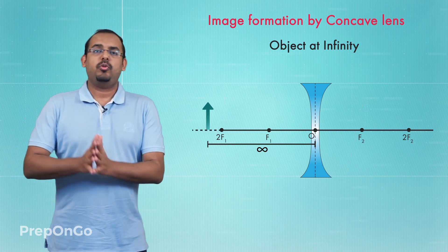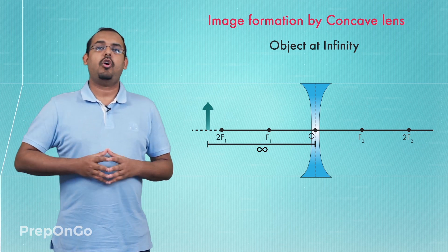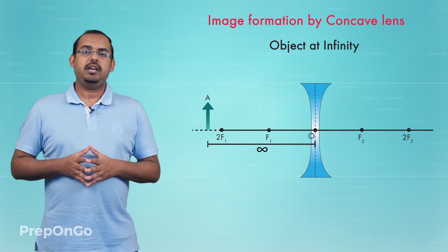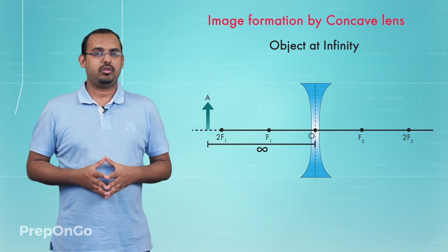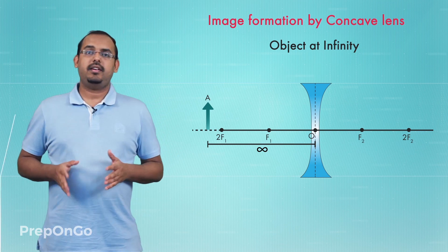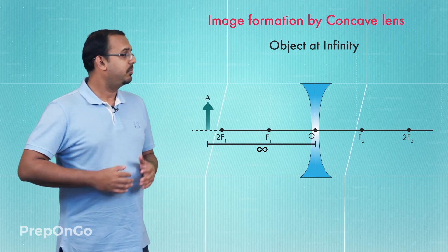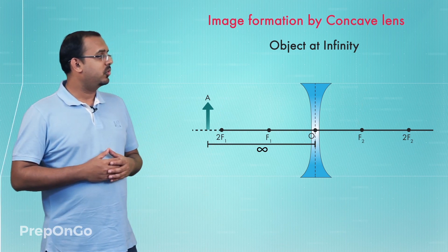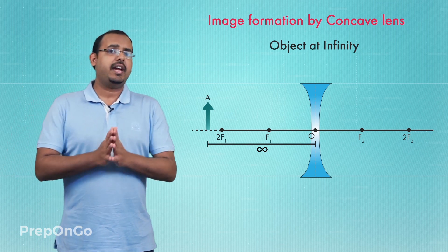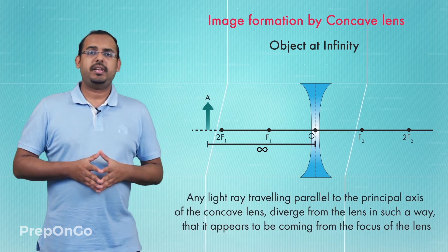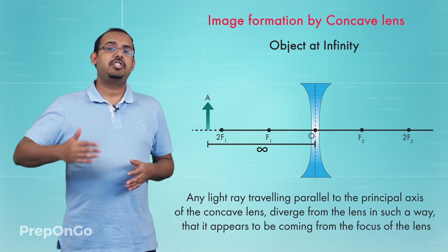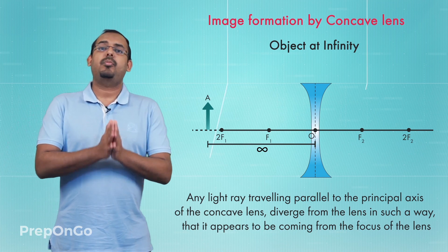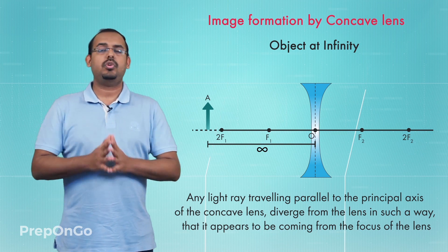When the object is very far away, we can consider the light rays coming from the object to be parallel to each other. We'll take two special light rays from a point on the object, both traveling parallel to the principal axis of the concave lens. We know that any light ray traveling parallel to the principal axis gets diverged by the concave lens in such a way that it appears to be coming from the principal focus of the concave lens.